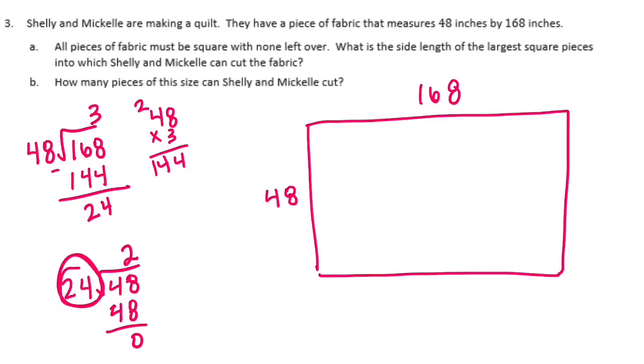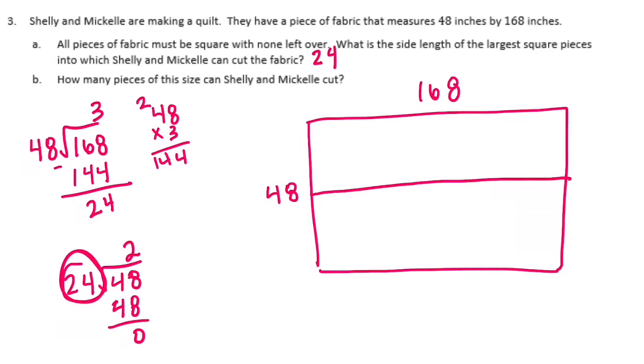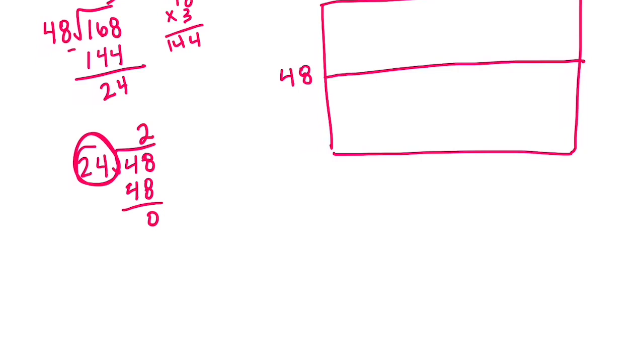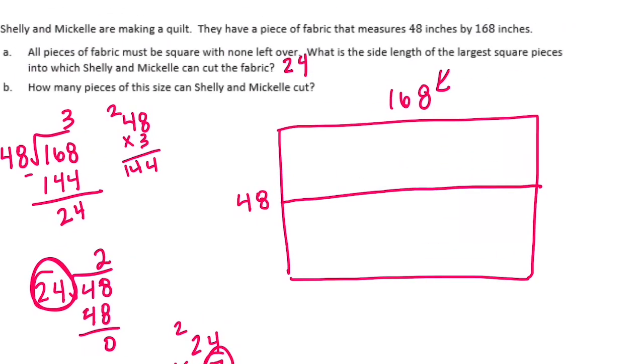So what is the side length of the largest square pieces into which Shelly and Mikkel can cut the fabric? That would be 24. And if we actually did that, so there's 24 and 24 for 48. Now we're left with the 168 here. And we need to know how many times we can split 168 into 24. So let's do 168 divided by 24. I know 25 times 4 would be 100. So 24 times 4 is close to 100. So let's do maybe 6 or 7 times. 4 times 7 is 28. Carry the 2. 7 times 2 is 14. Plus 2 is 168. Yeah. So 7 times. So I'm going to break this into 7 pieces.